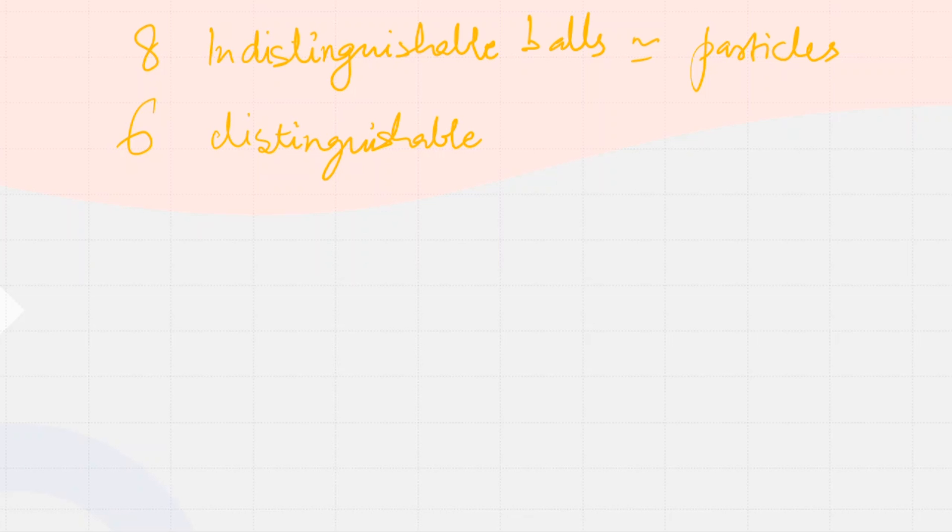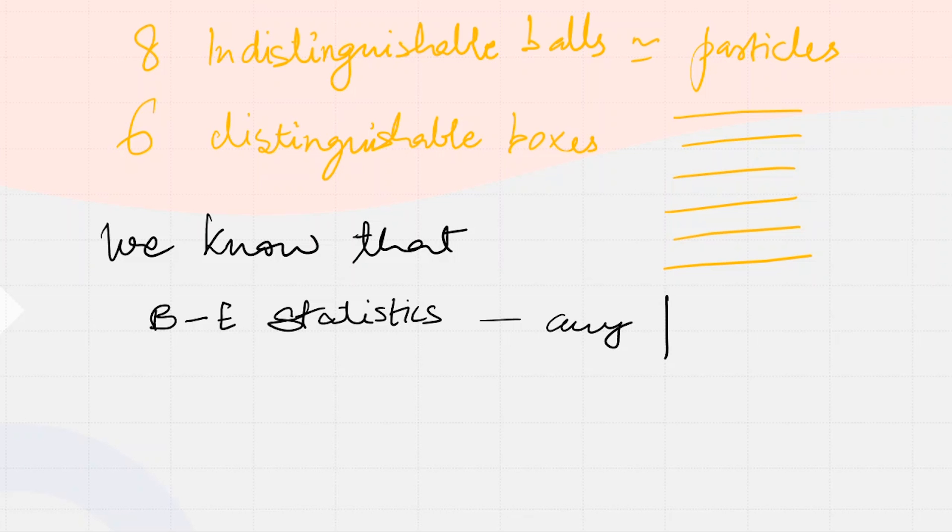We know that in Bose-Einstein statistics, any number of particles can be placed in different levels. There's no limitation in Bose-Einstein statistics, and we need to find the microstate.